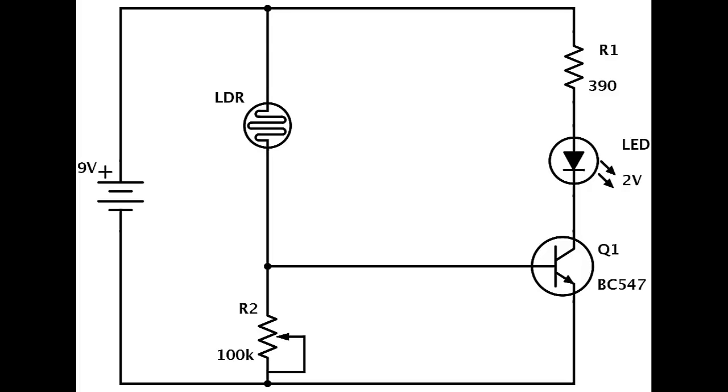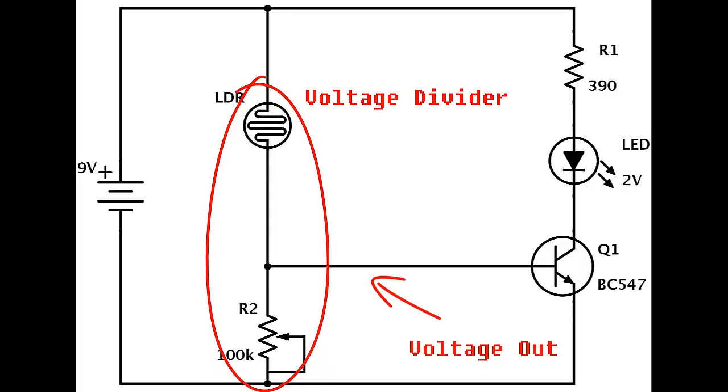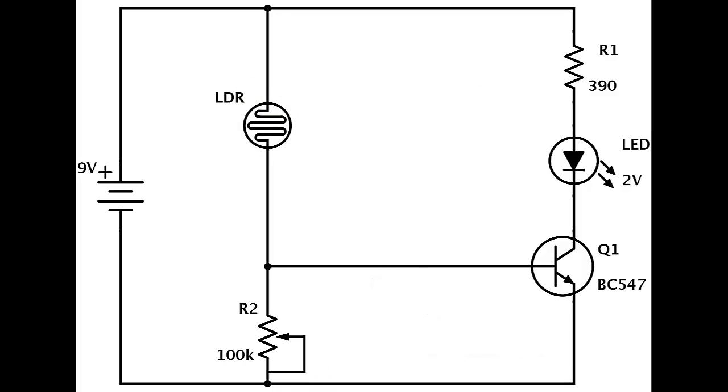So in this circuit, for example, I would see the light-dependent resistor together with the potentiometer down here. And I know from experience that two resistors set up like this makes a voltage divider, and that the voltage out would be a result of the values of these two resistors. So since I know that the resistance of the LDR varies with the amount of light it receives, I know that the voltage down here will vary with the amount of light too.